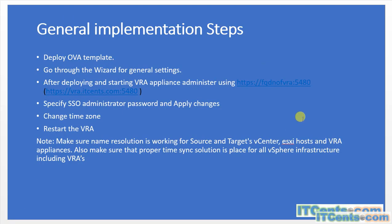The implementation steps are: first, deploy the OVA appliance — download it from the VMware site and import it, going through the wizard for settings. After deploying, go to https://FQDN-of-VR-appliance:5480, log in as root, specify the SSO administrator password, apply changes, and once services restart, change the time zone and restart the whole VRA appliance. Make sure name resolution is working for your source and target vCenter, ESXi hosts, and VRA appliances. Time sync is equally important — ensure proper NTP is in place.